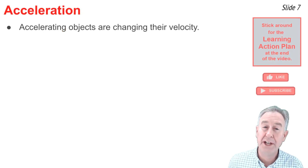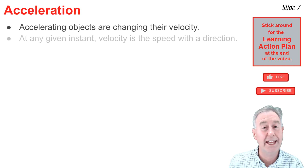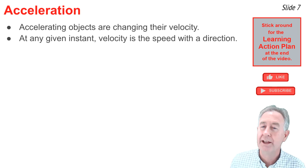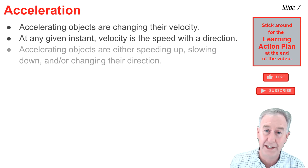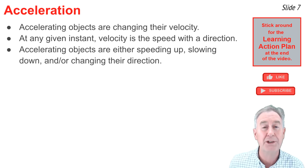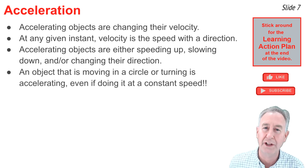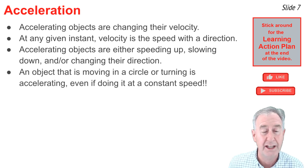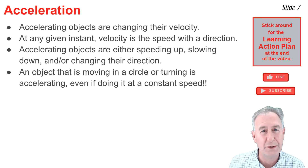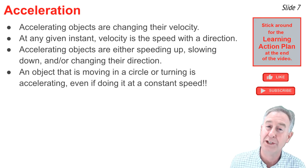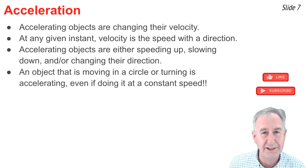In kinematics, accelerating objects are changing their velocity. At any given instant, the velocity is simply the speed with the direction. So an object that is changing either its speed or its direction is accelerating — objects that are speeding up, slowing down, or turning are all accelerating. For an object moving in a circle at a constant speed, it is accelerating — not because it's speeding up or slowing down, but because it's turning. Any object moving in a circle or along a curved path is accelerating, even if its speed is held constant.